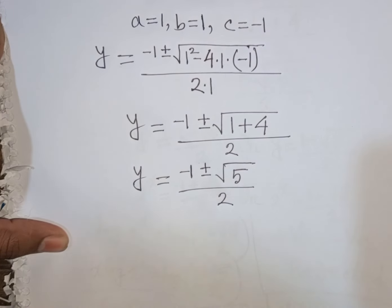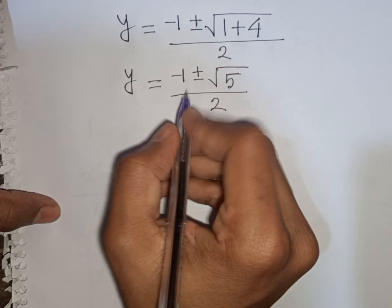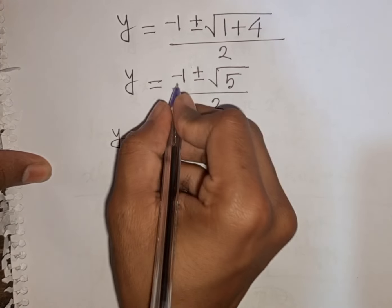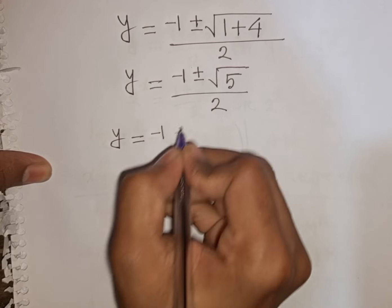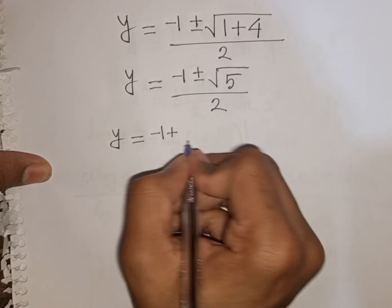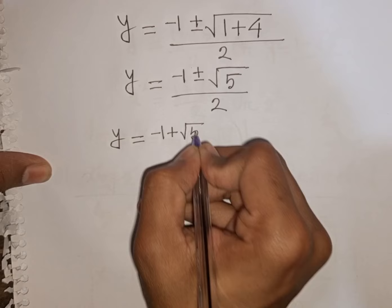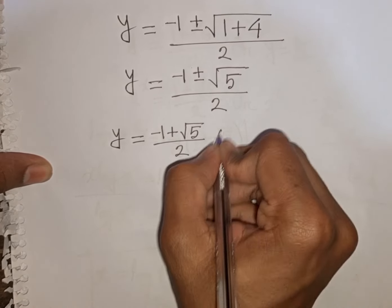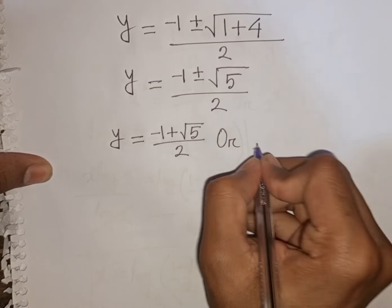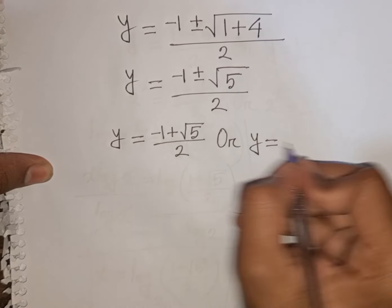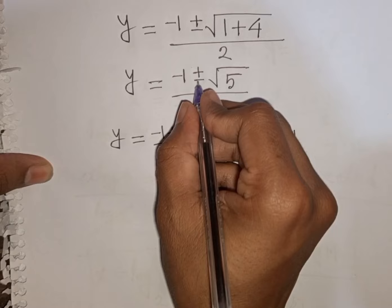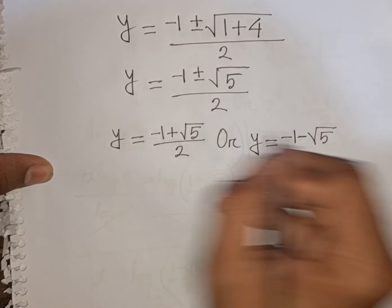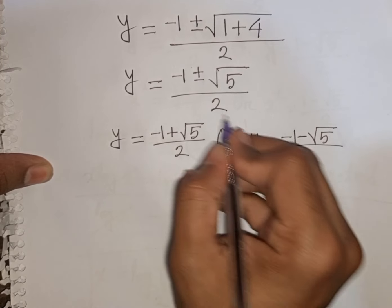So the two cases are: y = (−1 + √5) / 2, or y = (−1 − √5) / 2.